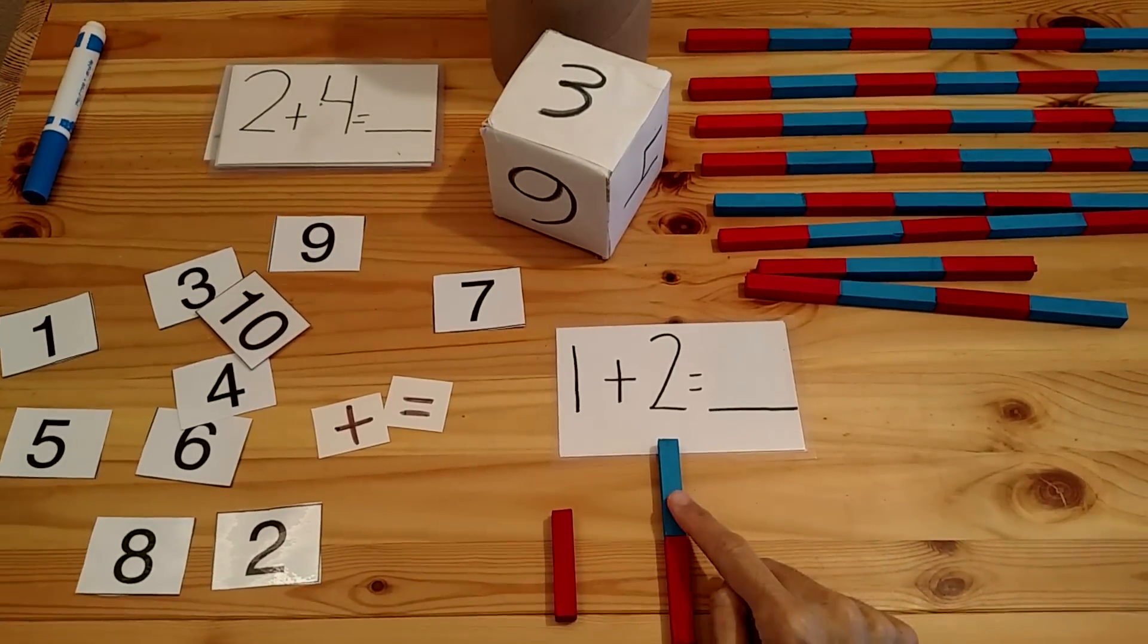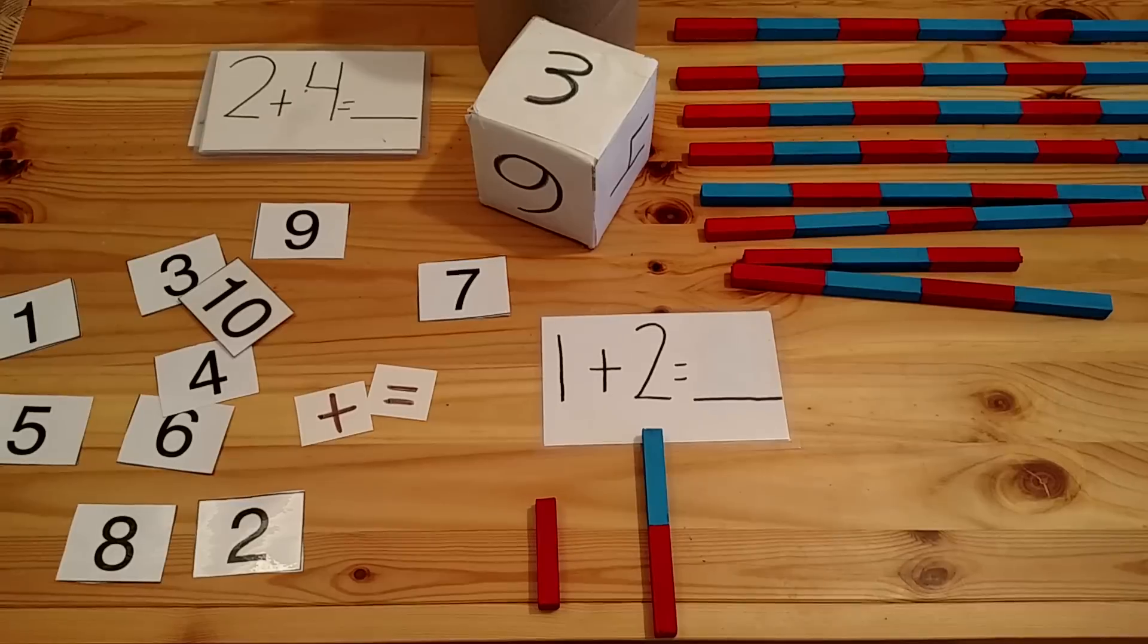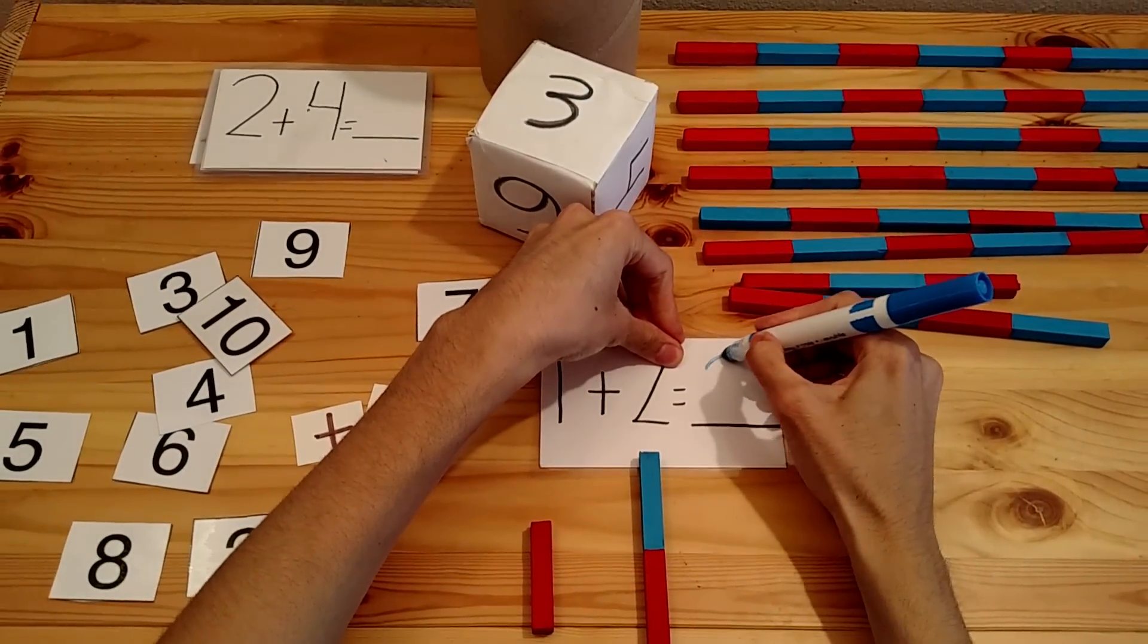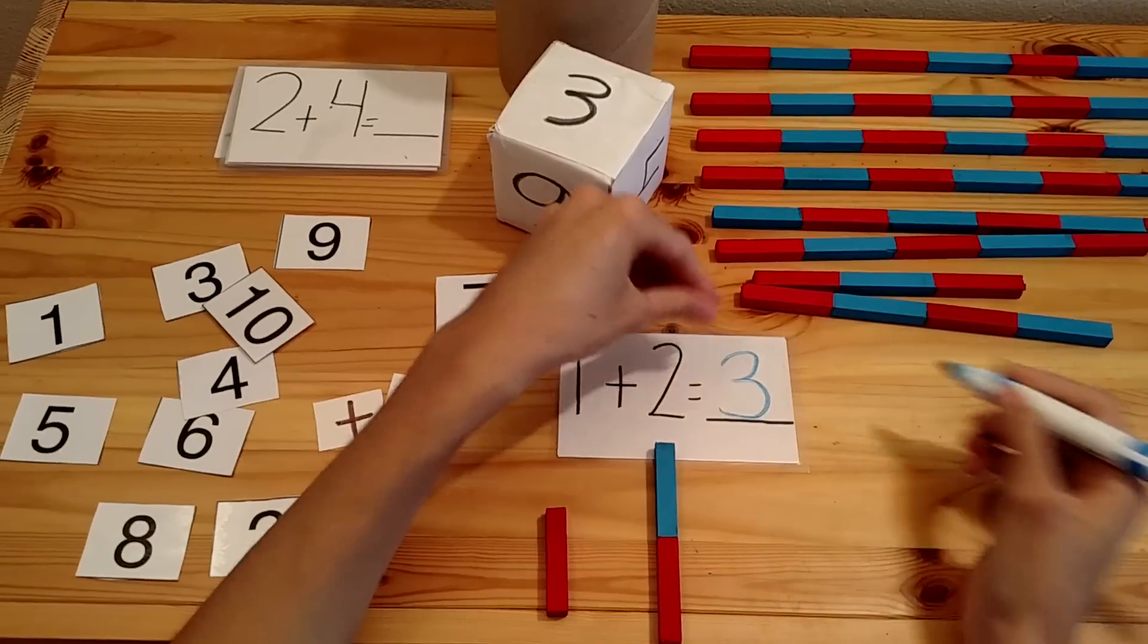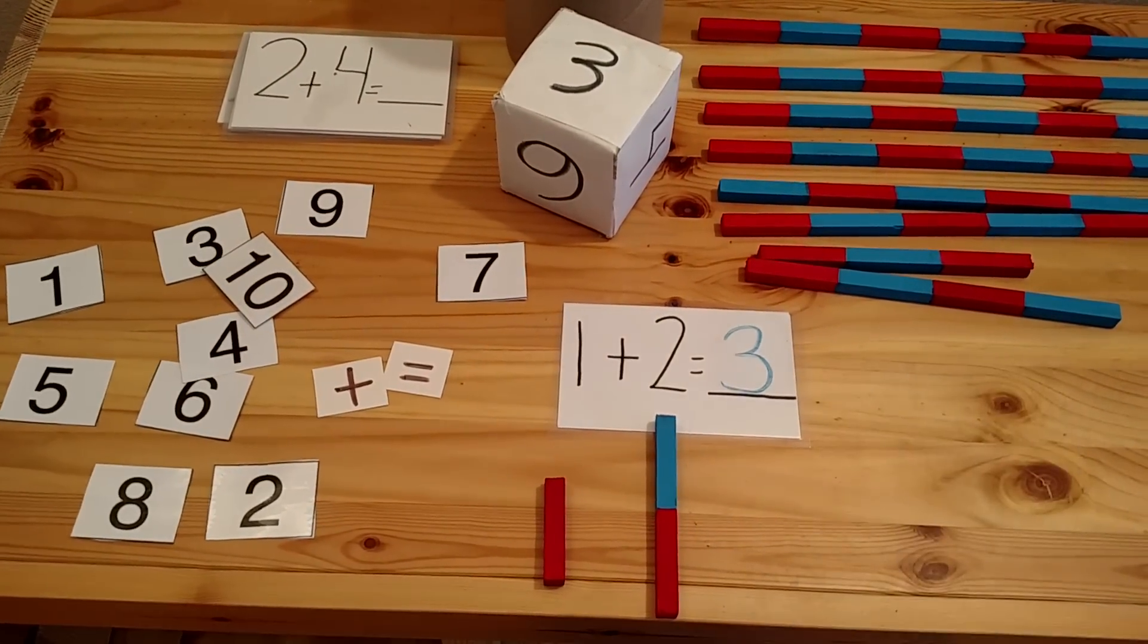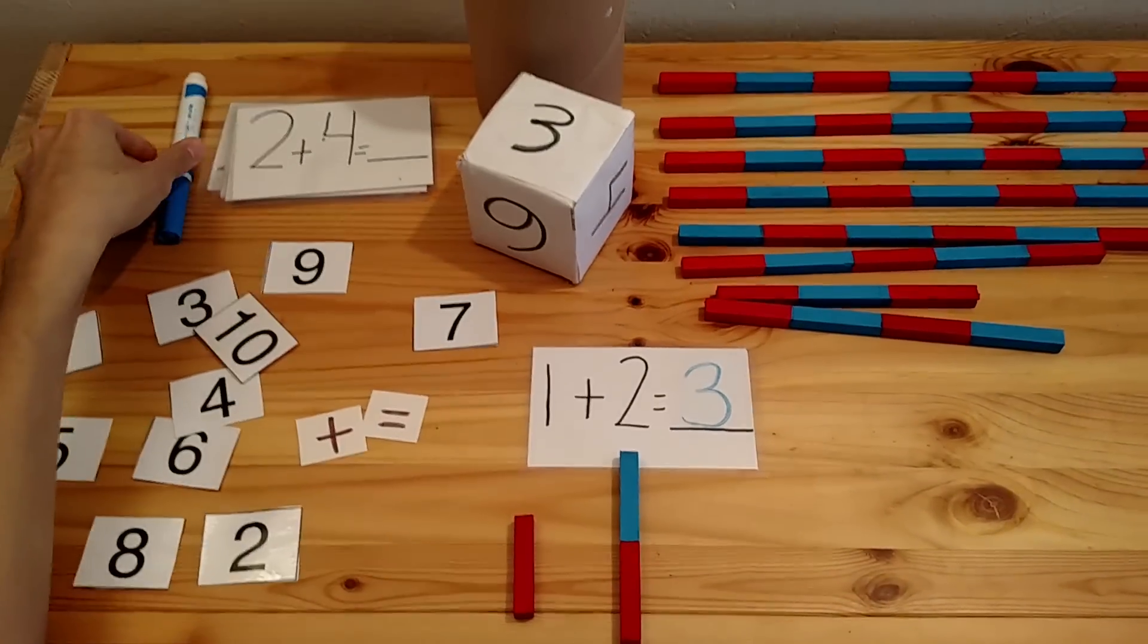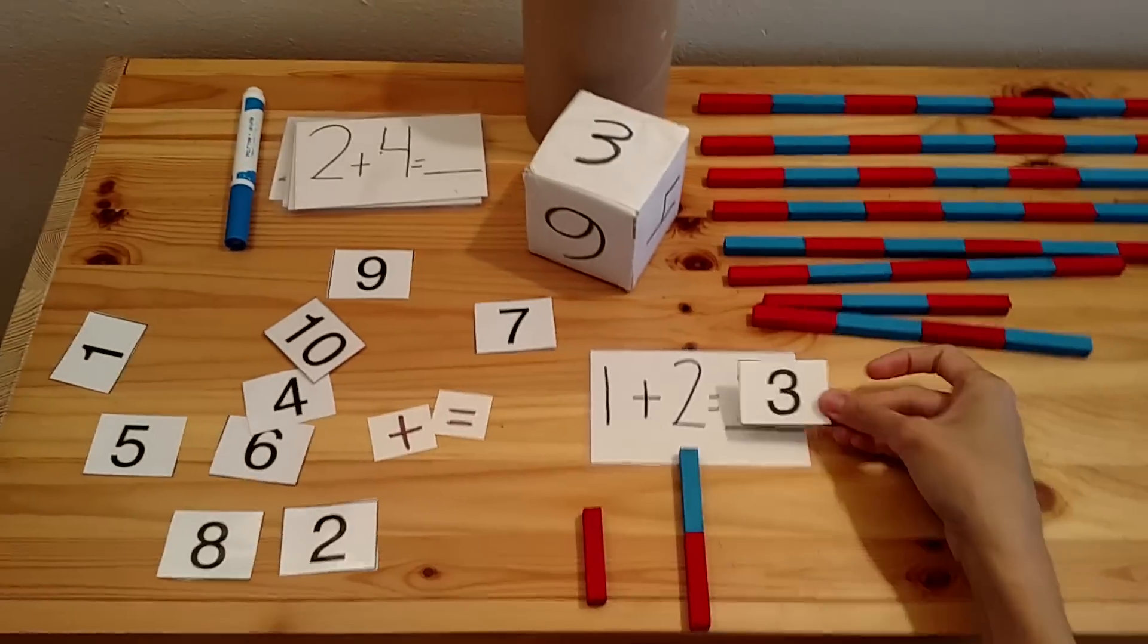One, two, three. If your child has the ability to write, have them write. Always have them write if they can write, and they write down their answer here with a dry erase marker. One plus two is three. And they go on and on working independently. If they cannot write and they're still having problems with their numbers, you can have them use number cards.